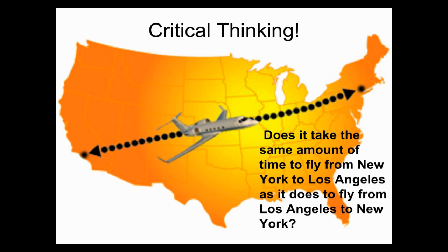Here's something to think about: does it take the same amount of time to fly from New York to Los Angeles as it does from Los Angeles to New York? If you think no, you're absolutely correct. It takes about 5 hours and 45 minutes to fly from New York to Los Angeles, and about 5 hours and 16 minutes from Los Angeles to New York. This is because you have a tailwind flying east and a headwind flying west — similar to riding a bicycle into the wind versus with the wind at your back. This wind is called the jet stream.